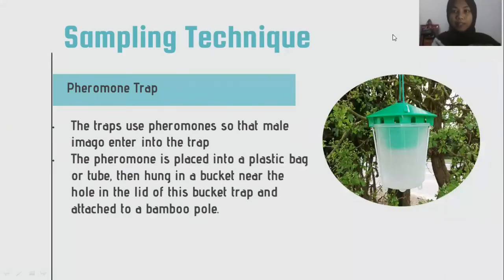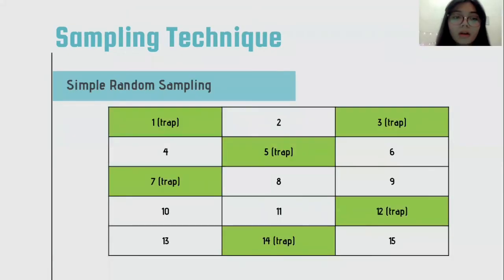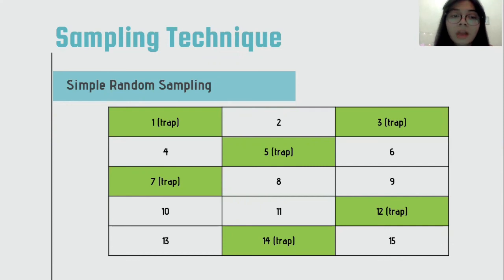For sampling techniques, we use pheromone traps. The trap uses pheromone so that adult imago enter into the trap. The pheromone is placed into a plastic bag or tube, then hung in a bucket near the hole in the lid of the bucket trap and attached to a bandwet wall. As shown in the slide, we use simple random sampling because the pest is spread over the entire area. In our picture you can see there are 15 beds and pheromone traps are placed at six points.